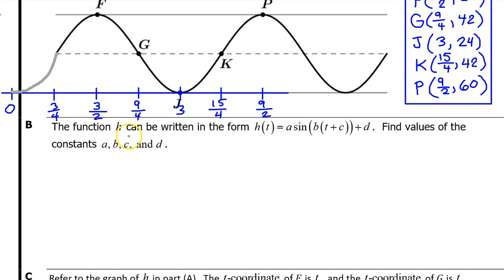Part B. The function h can be written in the form h of t equals a times the sine of b times the quantity t plus c plus d. Find the values of constants a, b, c, and d.